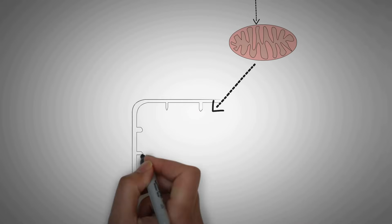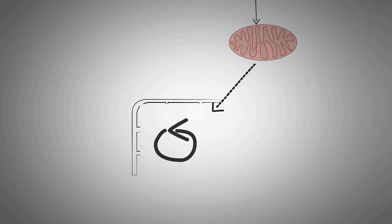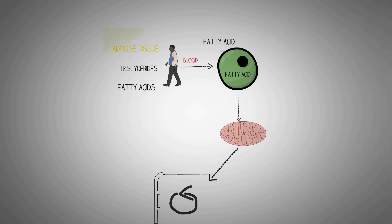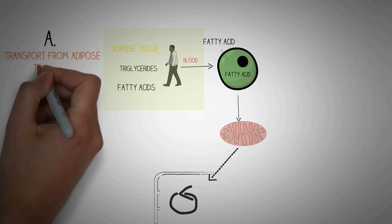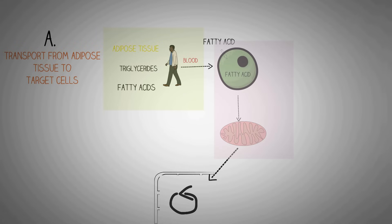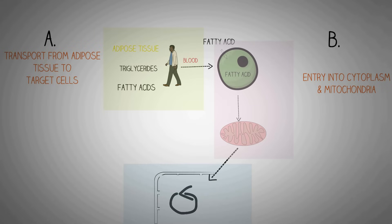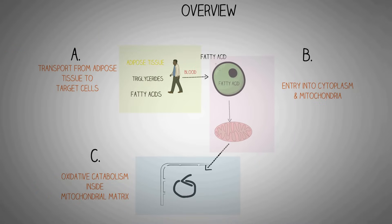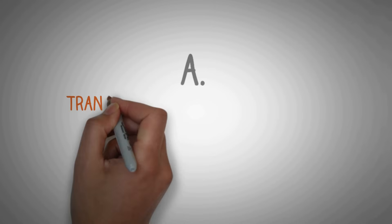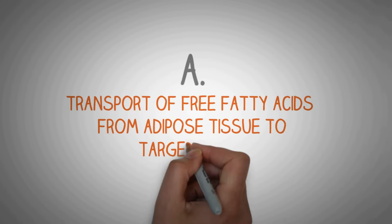In the next phase, the fatty acids enter into the matrix of the mitochondria after crossing the inner and outer mitochondrial membranes. In the final phase, the fatty acids are metabolized oxidatively inside the mitochondrial matrix. So the whole process of beta oxidation can be divided into three phases: A) transport of fatty acids from the adipose tissue to the target cells; B) entry of the fatty acids into the cytoplasm and then into the mitochondria of the cells; and C) oxidative catabolism inside the mitochondrial matrix.